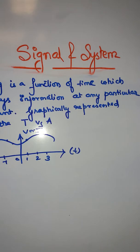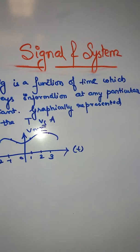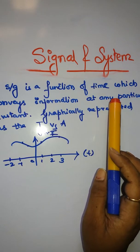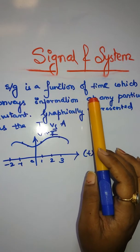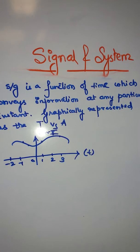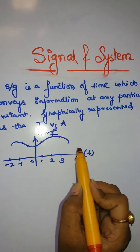So basically, what is a signal? A signal is a function of time which conveys information at any particular instant. You can represent it graphically as time versus amplitude.